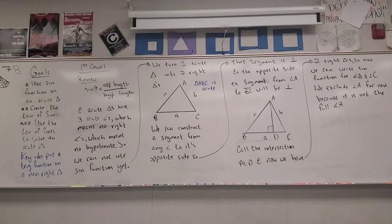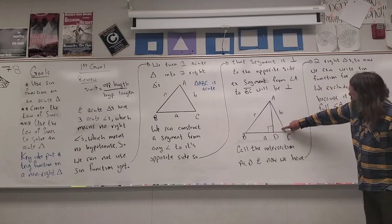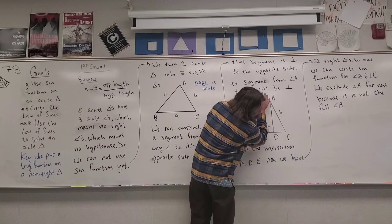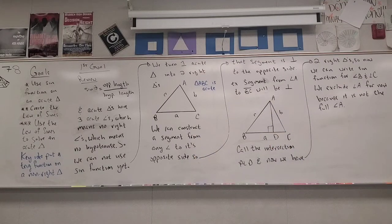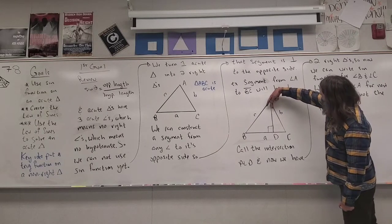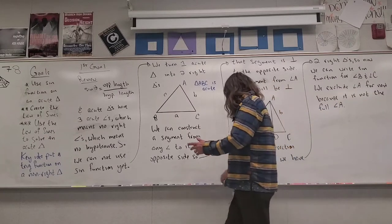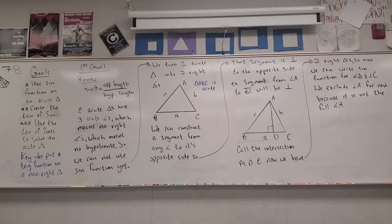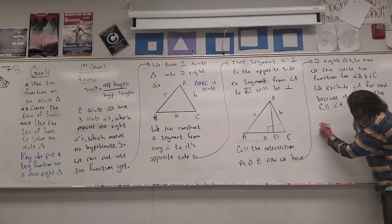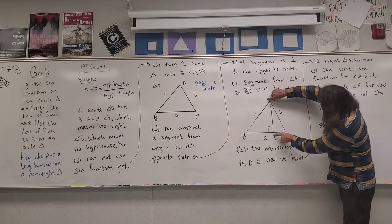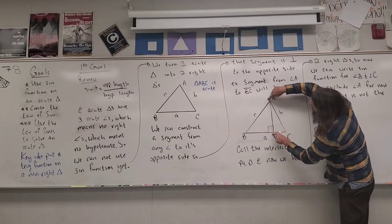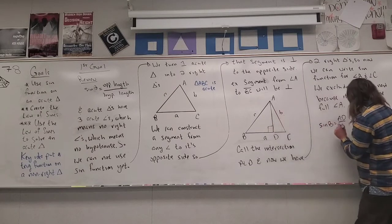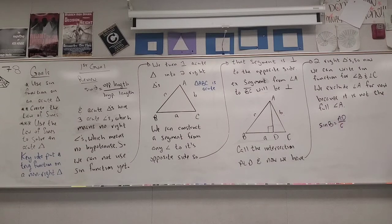Now we can write the sine function for angle B and angle C. For angle B, sine of angle B is equal to the opposite length — which is the length of AD — divided by the hypotenuse for that right triangle, which is length C. And for angle C, sine of angle C is equal to its opposite length, which is again length AD, divided by the hypotenuse for that right triangle, which is length B.